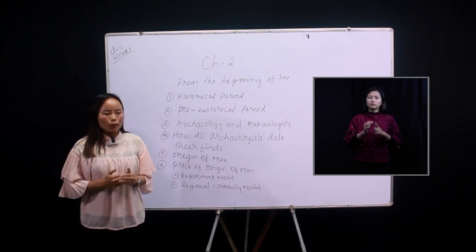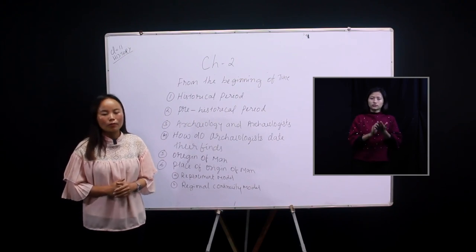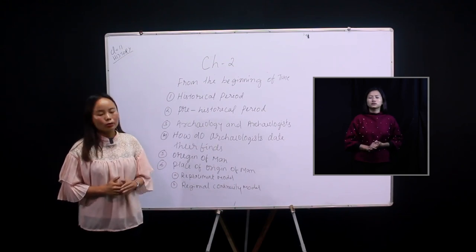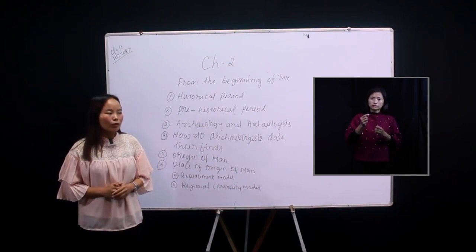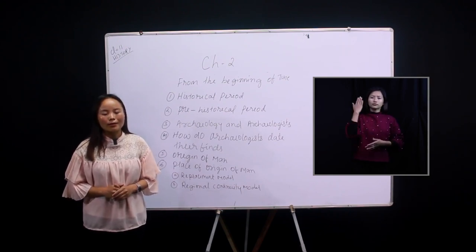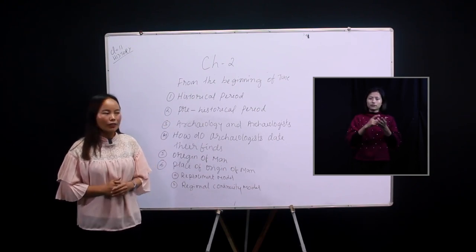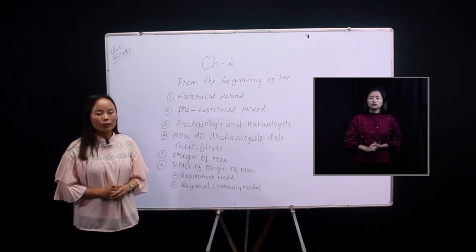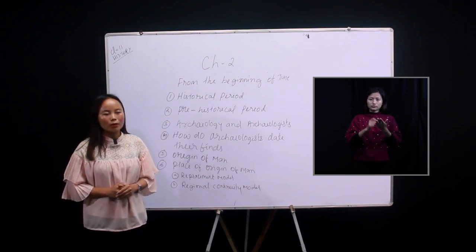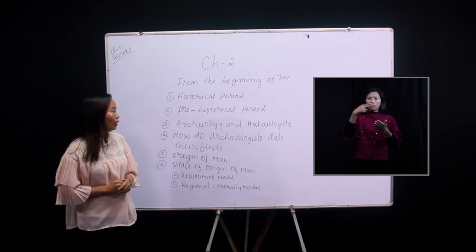The period of man's progress for which we have written sources is known as the historical period. The prehistorical period refers to when man had lived on earth millions of years ago before he developed the art of writing. Now you have the difference: historical period means we have written sources, and prehistorical period means before man developed the art of writing.